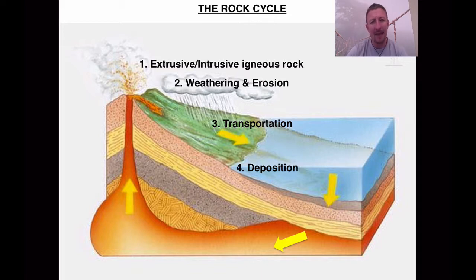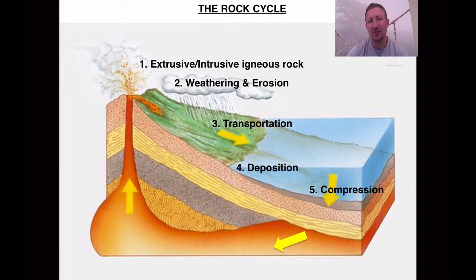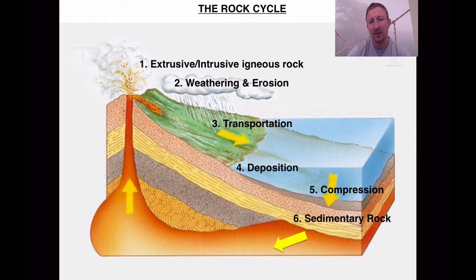Layers and layers get embedded on the seabed over a period of time until eventually it's all compressed together. This compression of the sediment is going to produce our second type of rock, which is sedimentary rock. In this case, the sedimentary rock is now younger than the extrusive or intrusive rock — reason being it's only just been formed.